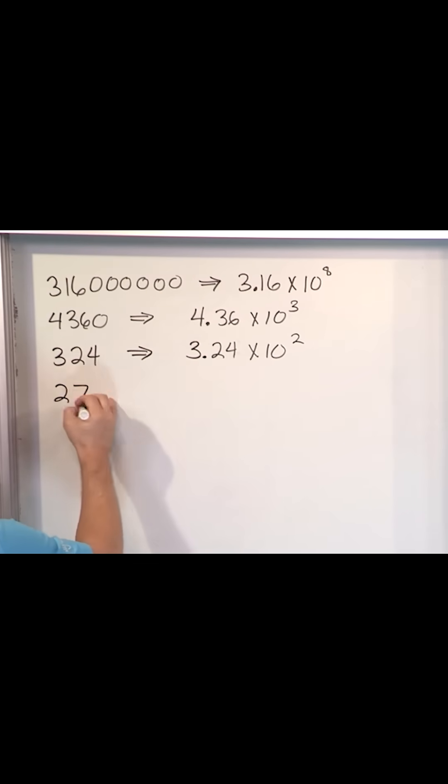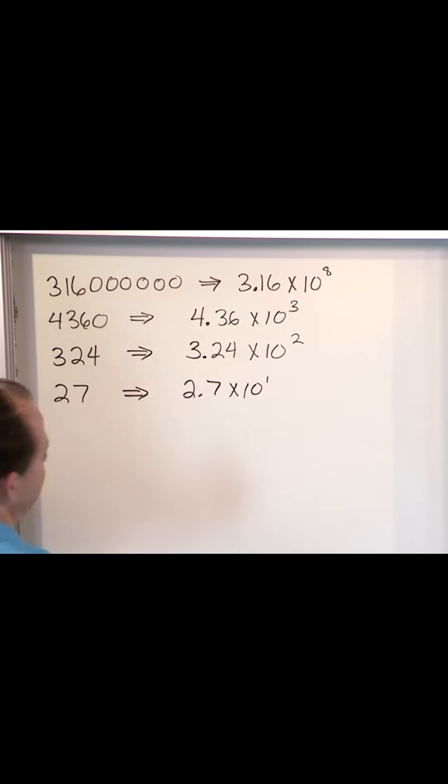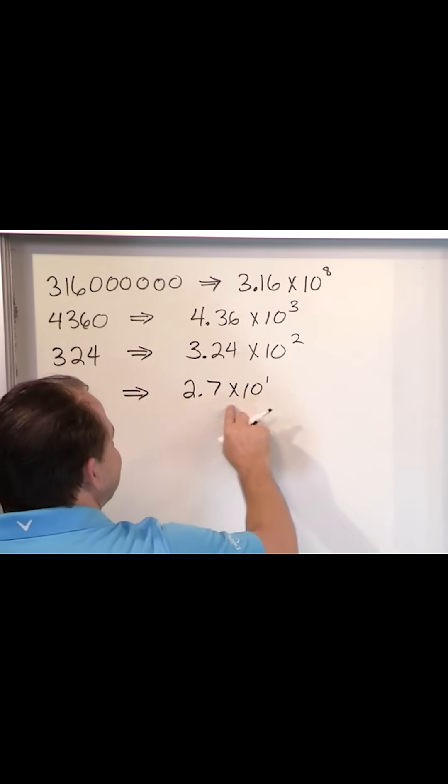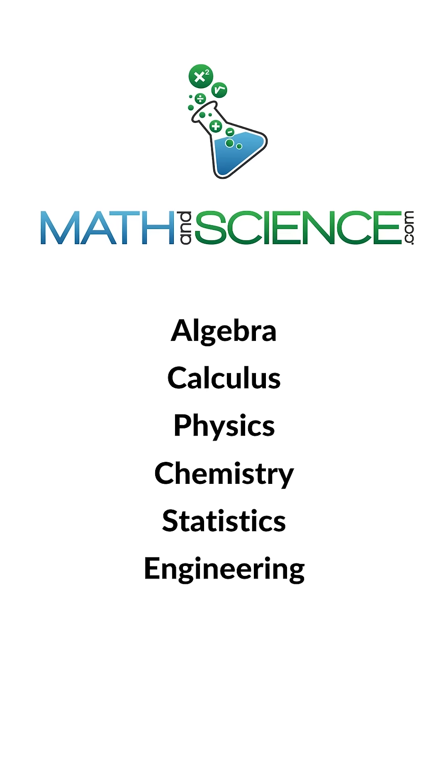And then finally, a simple number like 27. I would never use scientific notation, but I could. 2.7 times ten to the what? If the decimal's here, I move at one spot, which means it goes times ten to the one. Or you could just take the one out because multiplying by ten and ten to the one is the same thing. Learn anything at mathandscience.com